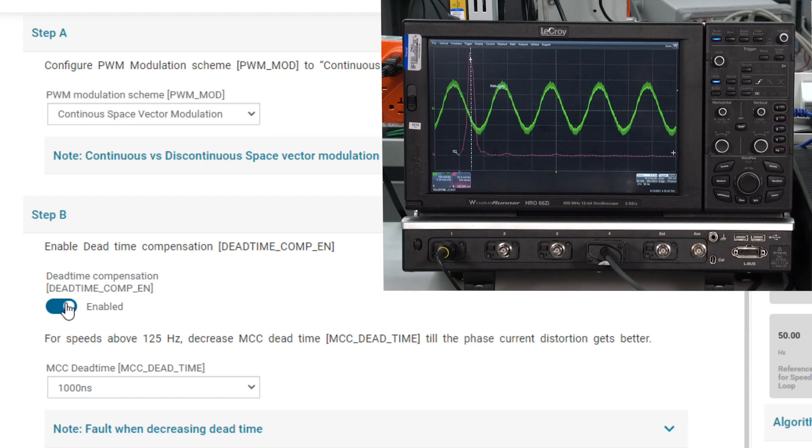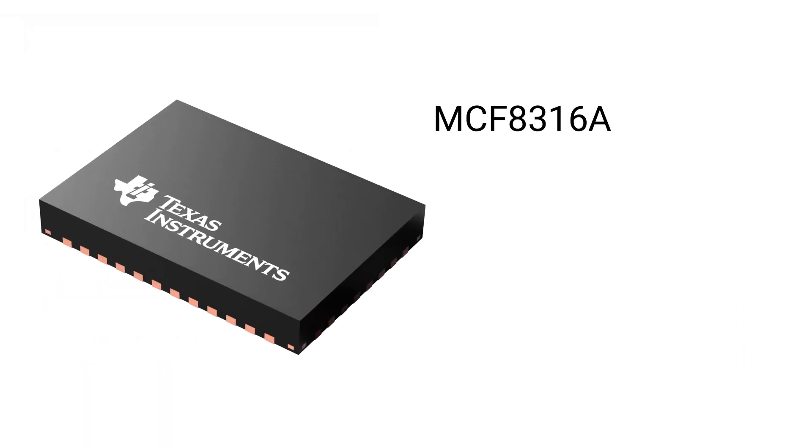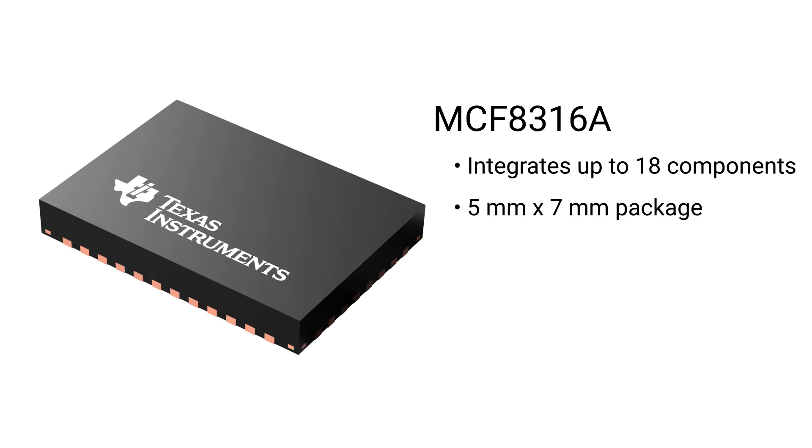The MCF8316A integrates up to 18 components in a 5mm by 7mm package, shrinking board space as much as 70%, and optimizing total system cost.